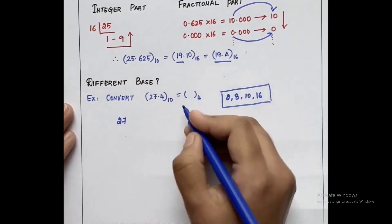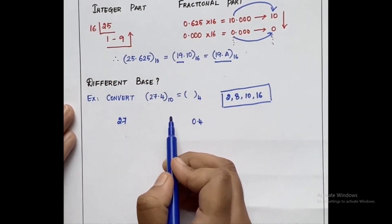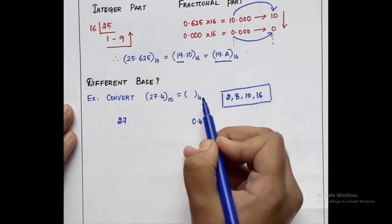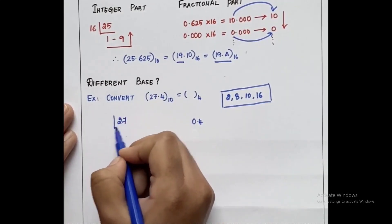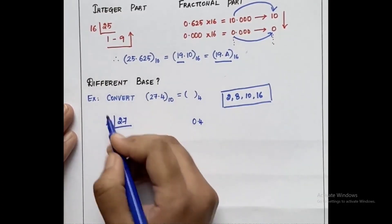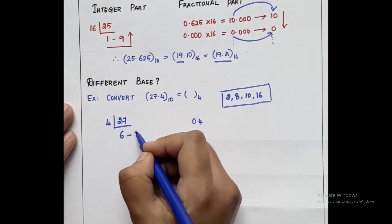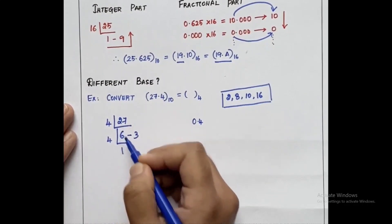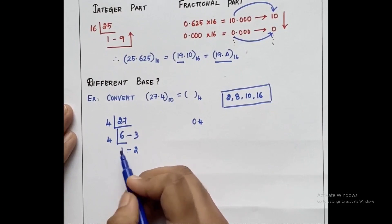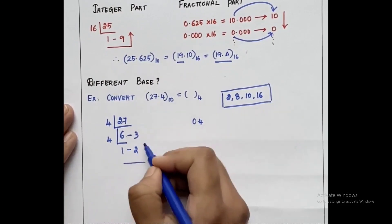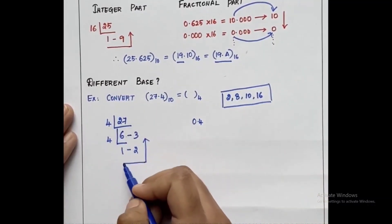We follow the same procedure: check for integer part and fractional part. The integer part is 27 and the fractional part is 0.4. For the integer part, divide by the corresponding base value 4. 4 sixes are 24, remainder 3 — keep that aside. Divide again by 4: 4 ones are 4, remainder 2. Since 1 is less than 4, we stop the dividing process and trace the arrowhead moving upwards.